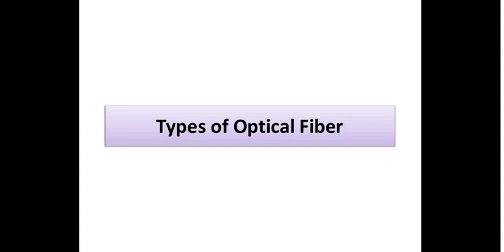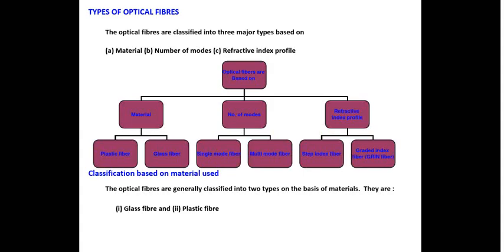Welcome to the new lecture. Today we are going to see about types of optical fiber. Optical fiber is classified based on different categories. First, based on material. Second, based on the number of modes. Third, based on the refractive index profile. Based on material, it is classified into two: plastic fiber and glass fiber. Based on number of modes: single mode fiber and multi-mode fiber. Based on refractive index profile: step index fiber and graded index fiber.